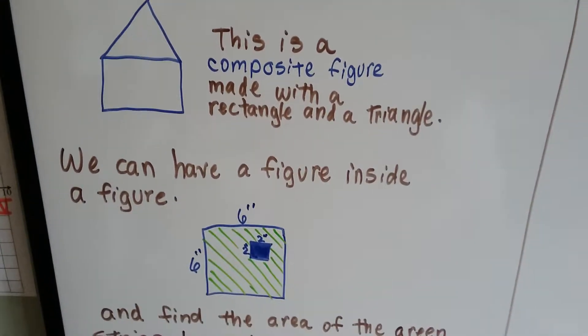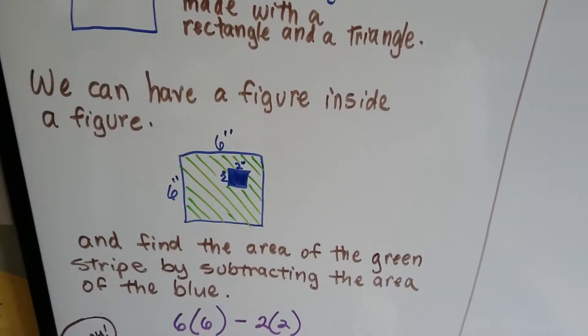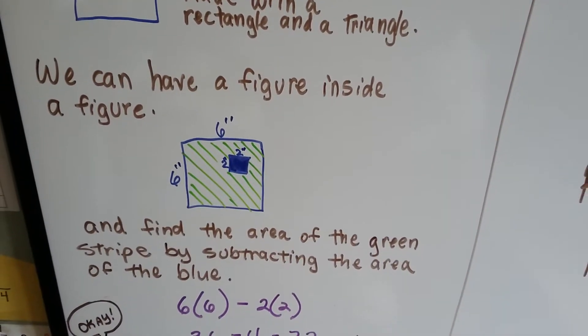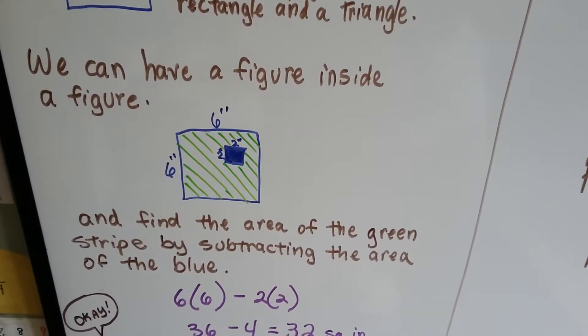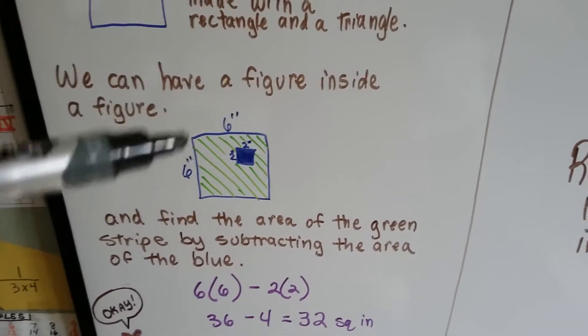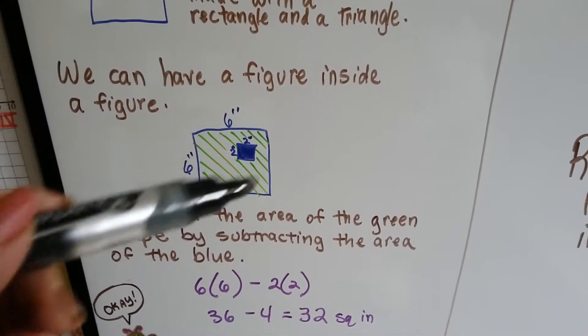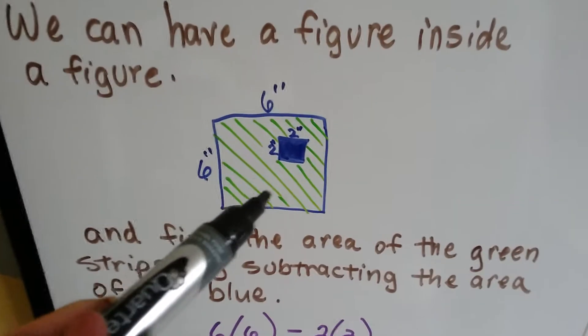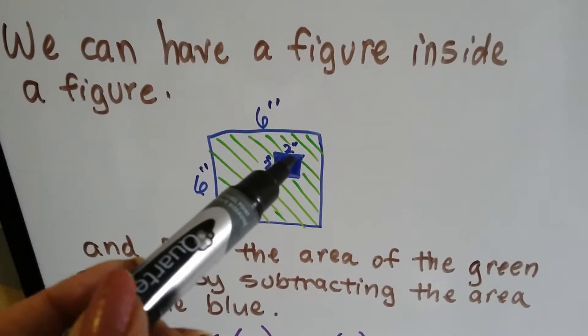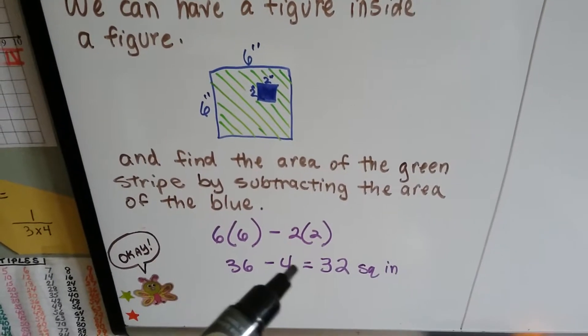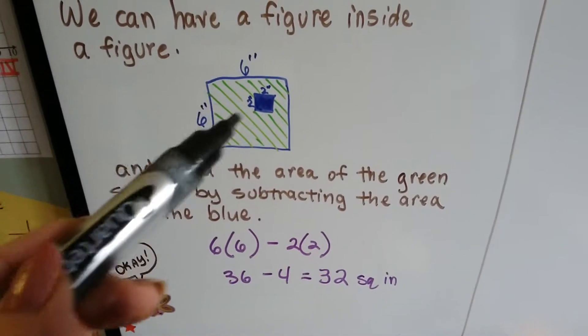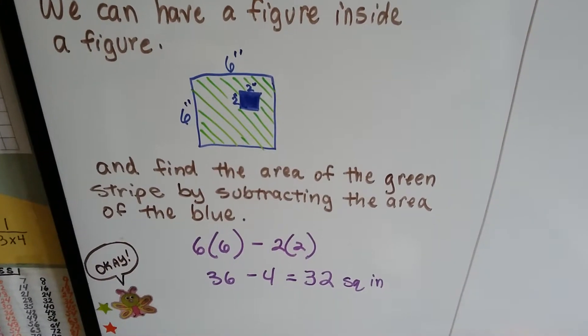We can have a figure inside of a figure and find the area of the green stripe by subtracting the area of the blue. If this is 6 inches by 6 inches, we know that the whole thing is 36 square inches. And if the little blue part is 2 by 2, that's 4. All we have to do is take the 4 from the 36, and we know that the green striped area is 32 square inches.